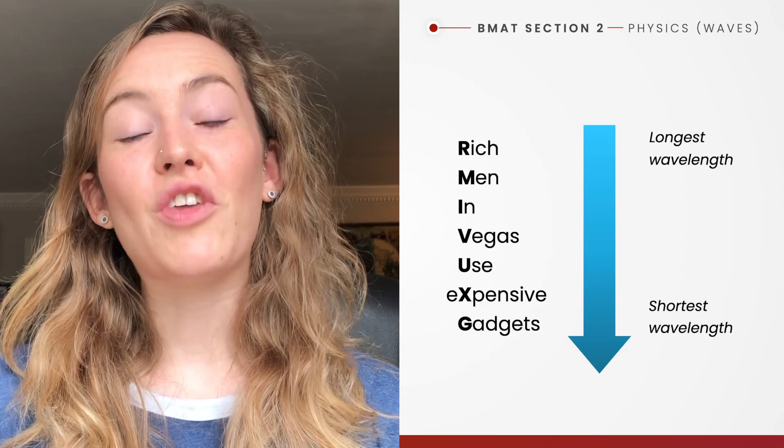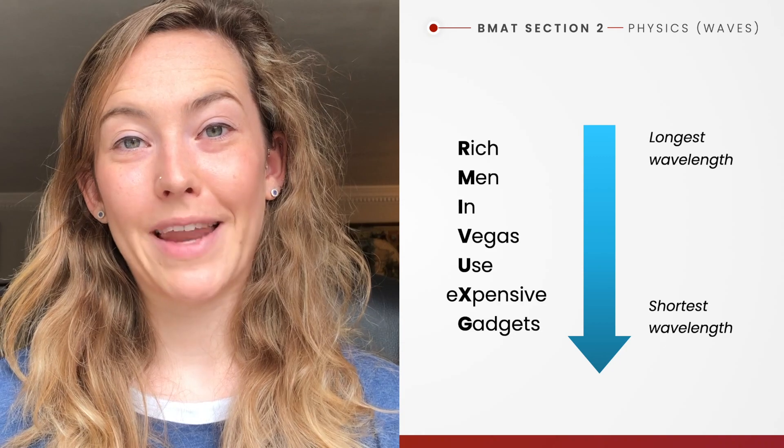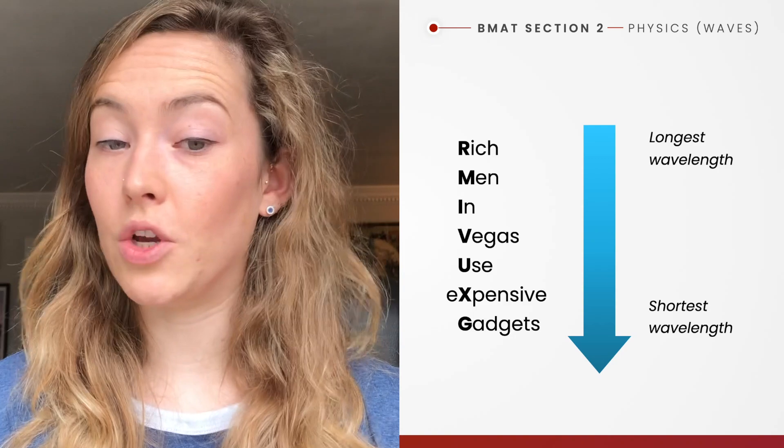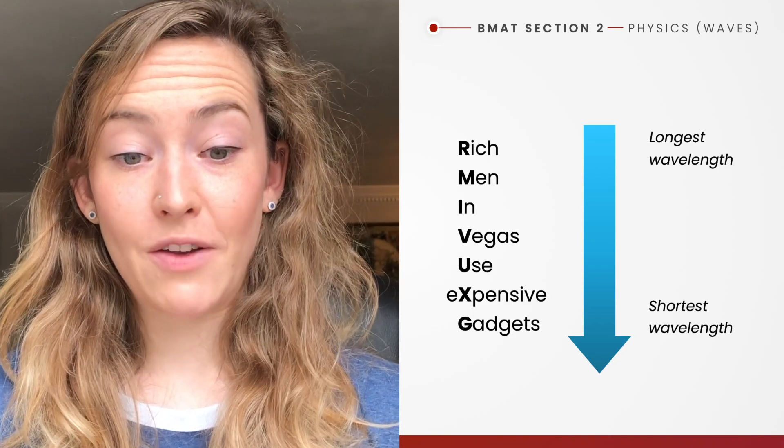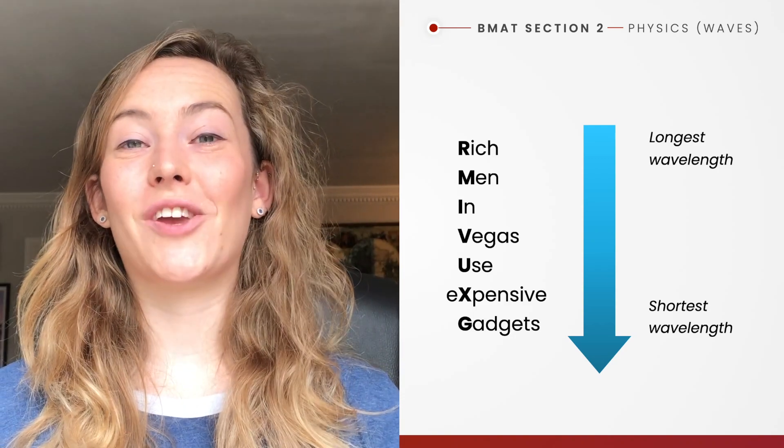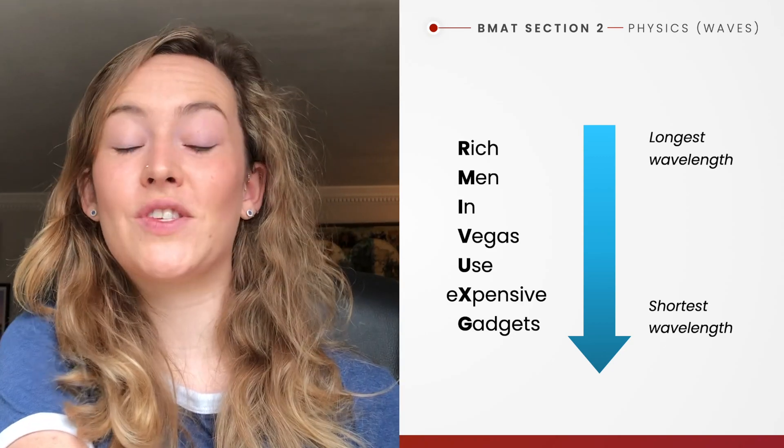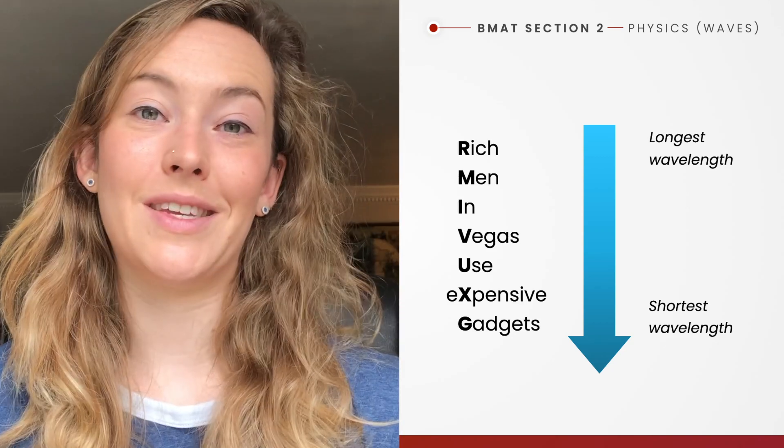You need to remember the order of the wavelengths in the electromagnetic spectrum and a really easy way of doing this is to create a mnemonic. Here's a really good example: Rich men in Vegas use expensive gadgets. That takes you in order from the longest, the radio waves, all the way to the shortest, gamma.